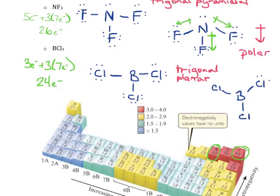It's a good idea to redraw this so you can really see that it's trigonal planar. A trigonal planar molecule has 120-degree bond angles. I really recommend that when determining polarity, you first draw the Lewis structure, and then if your Lewis structure doesn't match the correct geometry, redraw it. Again, I'm going to check my electronegativities: boron has 2.0 and chlorine has 3.0, so there is a difference and I do have polar bonds. I'll draw dipole arrows pointing toward the more electronegative element, which is chlorine.